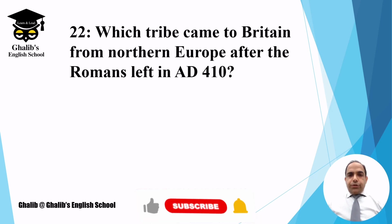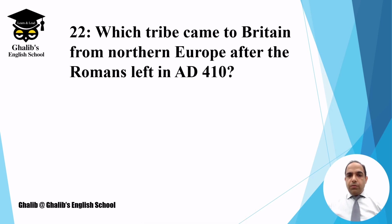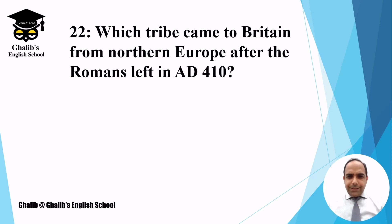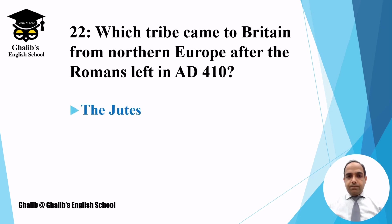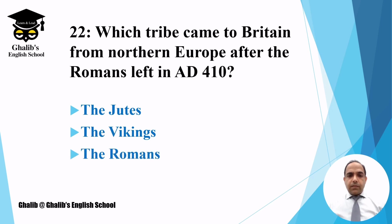Question number twenty-two: which tribe came to Britain from Northern Europe after the Romans left in AD 410? When the Romans departed after 400 years, they never returned. The options are the Jews, the Vikings, the Romans, or the Burgundians.